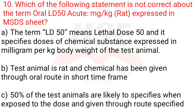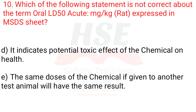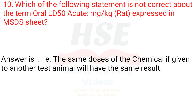Question 10: Which of the following statements is not correct about the term oral LD50 acute (mg/kg, rat) expressed in MSDS sheet? A. The term LD50 means lethal dose 50 and it specifies doses of chemical substance expressed in mg per kg body weight of the test animal. B. Test animal is rat and chemical has been given through oral route in a short time frame. C. 50% of the test animals are likely to die when exposed to the dose and given through the route specified. D. It indicates potential toxic effect of the chemical on health. E. The same dose of the chemical if given to another test animal will have the same result. The answer is E.